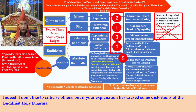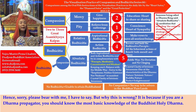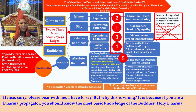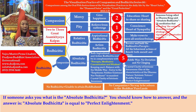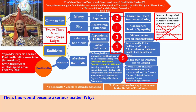I don't like to criticize others, but if your explanation has caused distortions of the Buddhist holy dharma, or people in the future would follow your explanation and practice wrongly, then I have to correct it. Why is this wrong? It is because if you're a dharma propagator, you should know the most basic knowledge of the Buddhist holy dharma. If someone asks you what is the absolute bodhicitta, you should know how to answer: absolute bodhicitta is equal to perfect enlightenment. If you don't know the answer is perfect enlightenment and you answer other things, these things would lead others to do the wrong things, and this would become a serious matter.